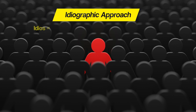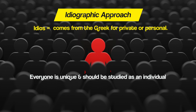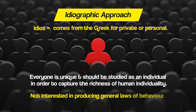The word 'idios' comes from the Greek for private or personal. An ideographic approach takes the view that everyone is unique, and therefore should be studied as an individual in order to capture the richness of human individuality. It is not interested in looking for how we're all the same, and so does not aim to produce general laws of behaviour.